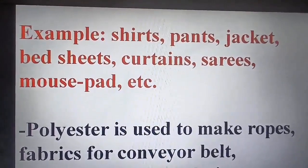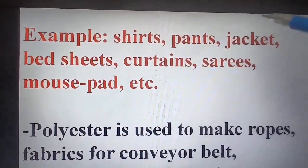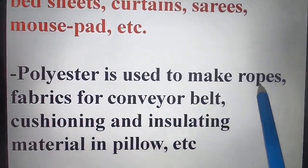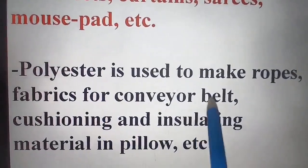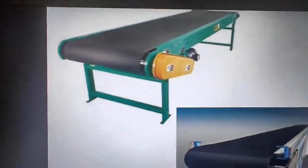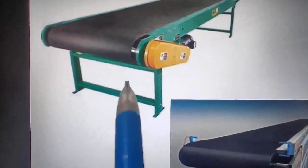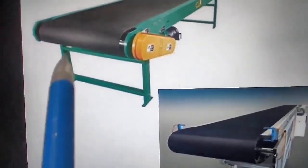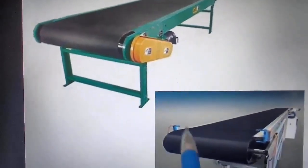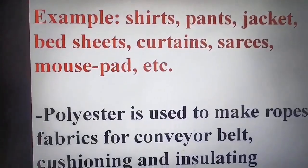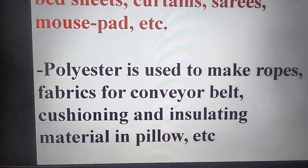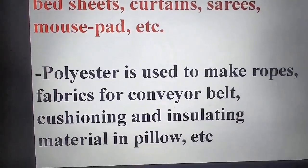Polyester is used to make robes, fabrics for conveyor belts — the kind seen at metro stations and airports where products move along — and in cushioning and insulating material and pillows. So polyester is used in all these applications.